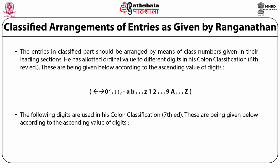The following digits are used in Colon Classification 7th edition, listed below in ascending ordinal value: asterisk, double inverted commas, forward arrow, arrestor, ampersand, inverted comma, dot, colon, semicolon, dash, comma, equals sign, plus, forward arrow, small a through small z, 0, 1, 2 through 9, capital A, B, C through Z, and starter.